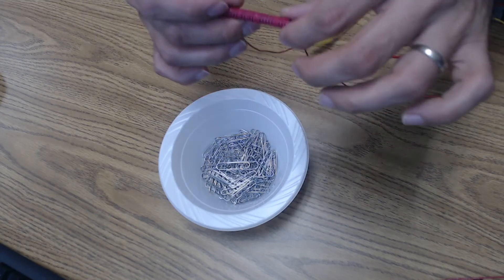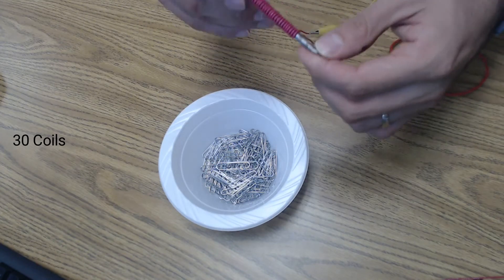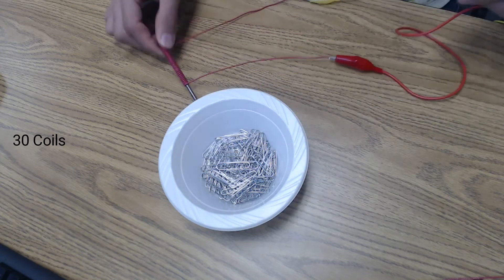Okay, on our next trial we're going to be using 30 coils around the nail. All right, see how we do. Let me power on.